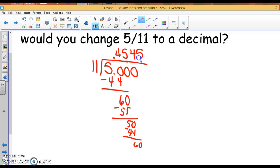11 goes into 60, 5 times, that's 55. I subtract, I get 5, bring down a 0. I could go on forever and ever, but this is what we call a repeating decimal.